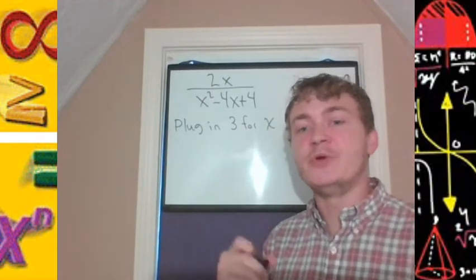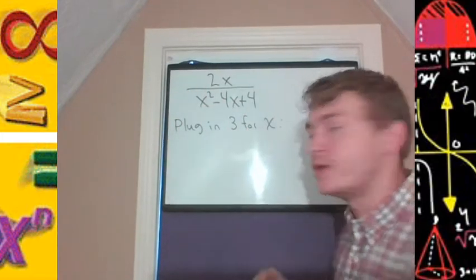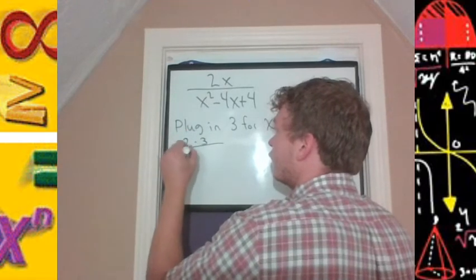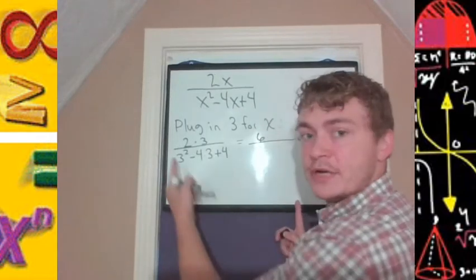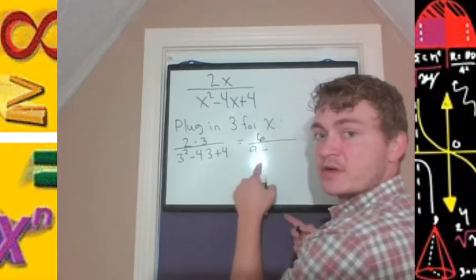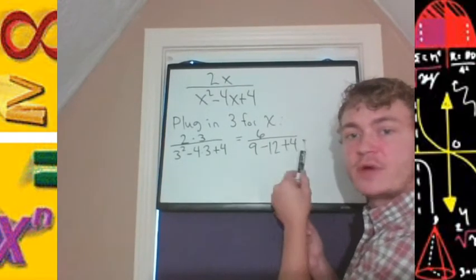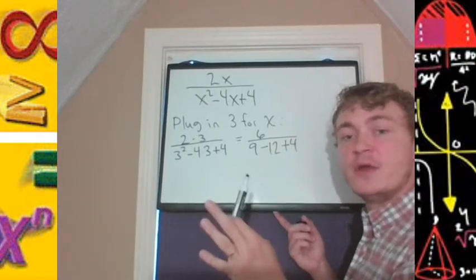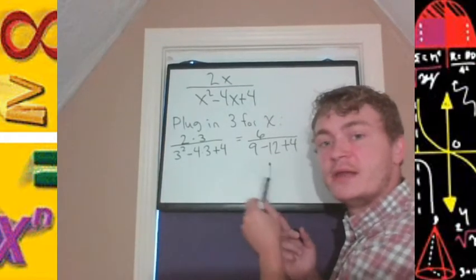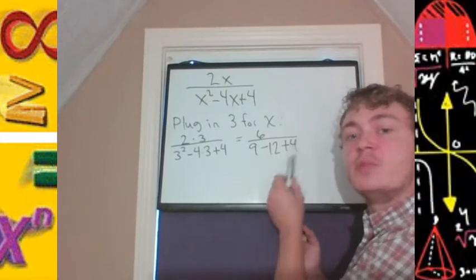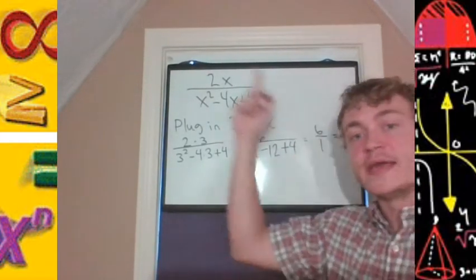We evaluated the numerator to get 6 and the denominator: 3 squared is 9 minus 4 times 3 gives us subtracting 12 then adding 4. For the subtraction and addition we read left to right per PEMDAS: 9 minus 12 is negative 3, negative 3 plus 4 is 1. So when x is 3, our expression equals 6.